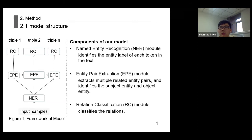Next, I first introduce the overall structure of the proposed model and then introduce each module in detail. It can be seen from Figure 1 that the joint model we proposed consists of three modules: named entity recognition module, the entity pair extraction module, and the relation classification module.